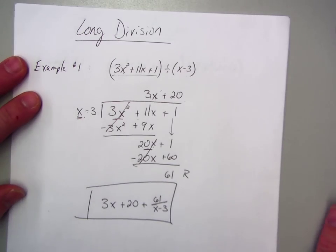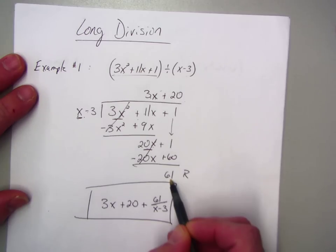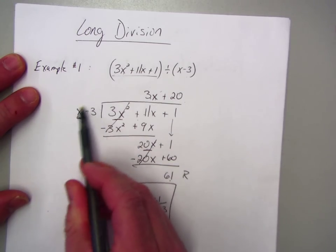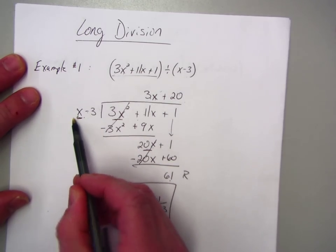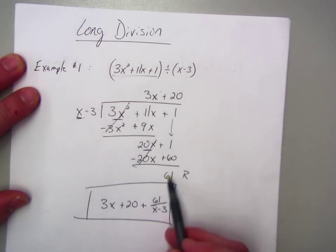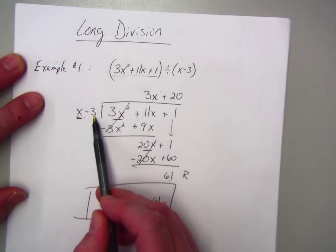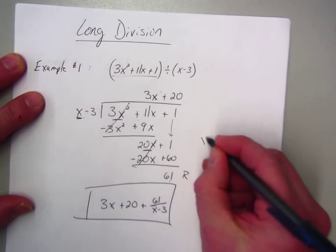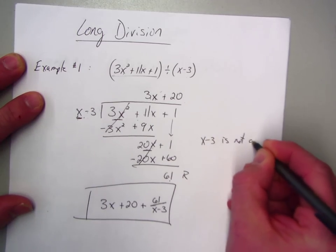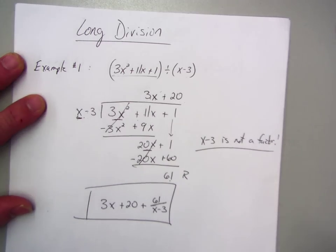Now, in the remainder and factor theorems, where it states that if I have a remainder that is 0, then that means this right here becomes a factor of the polynomial. And factors are what give me my zeros, or my solutions for equations. Since the remainder is not 0, that means x minus 3 is not a factor. So, x minus 3 is not a factor.